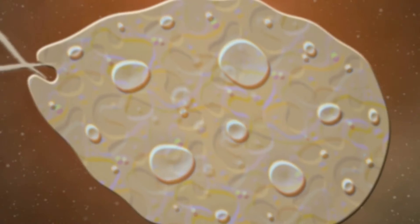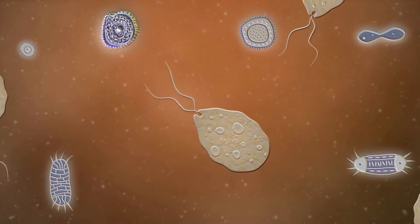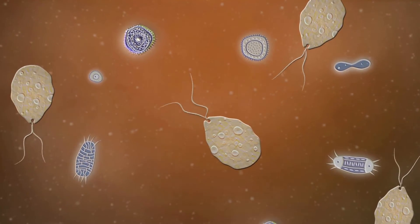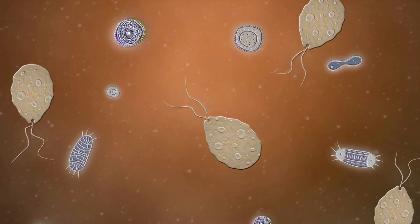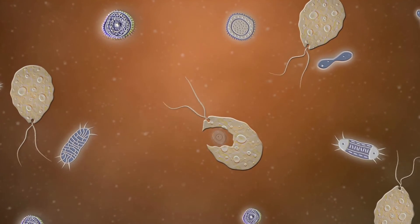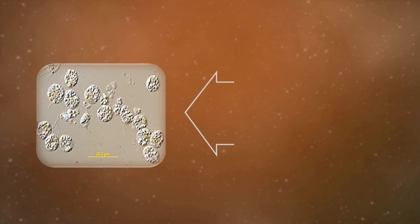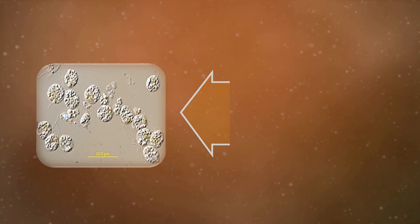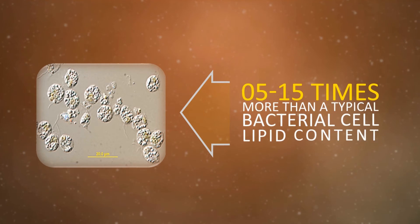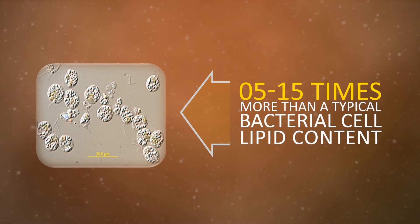They are eukaryotic and do not have cell walls. They can create a current with the flagella moving, which forces fluid and particles, including bacteria, to flow toward the front, aggregate them, trap them at its surface, and engulf them. A single algal cell can have anywhere from 30 to 80 percent of their cell weight as lipids, which is 5 to 15 times more than a typical bacterial cell lipid content.